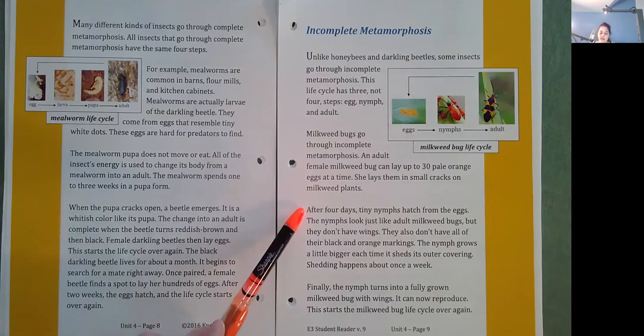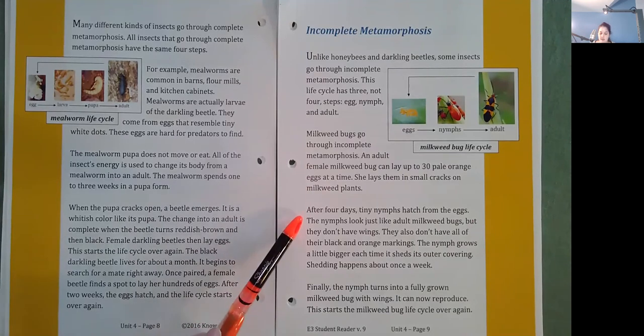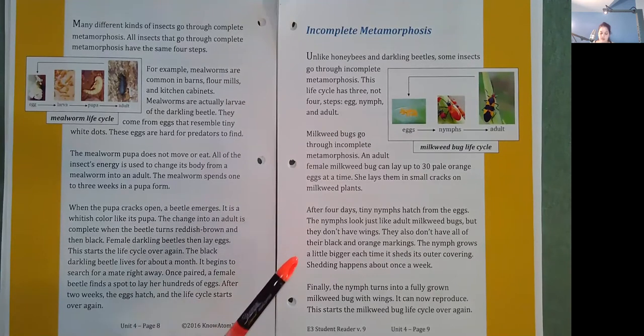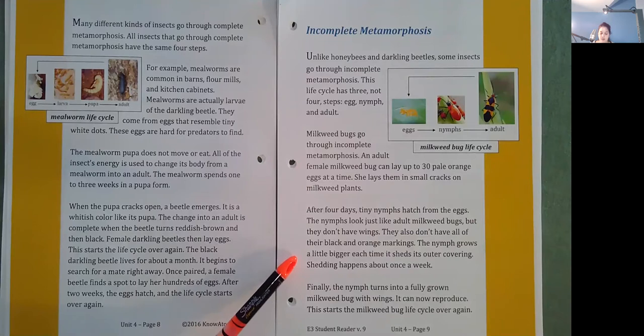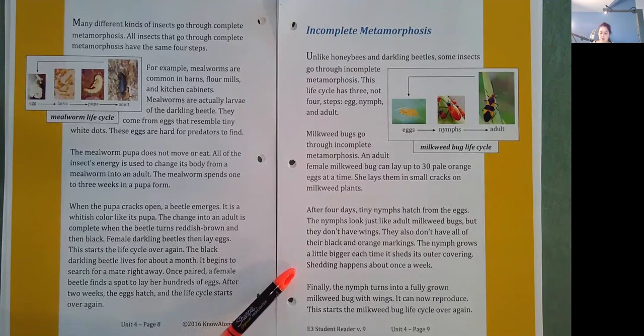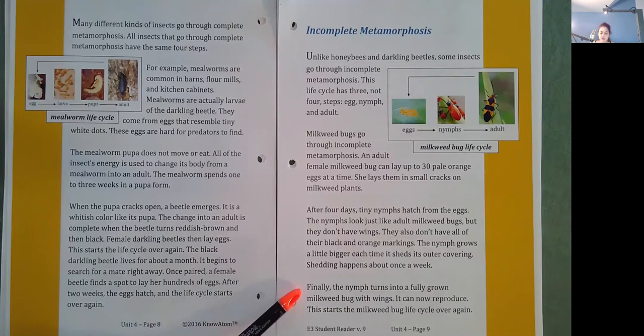After four days, tiny nymphs hatch from the eggs. The nymphs look just like adult milkweed bugs, but they don't have any wings. They also don't have all of their black and orange markings. The nymph grows a little bigger each time it sheds its outer covering. Shedding happens about once a week. Finally, the nymph turns into a fully grown milkweed bug with wings. It can now reproduce. This starts the milkweed bug lifecycle over again.